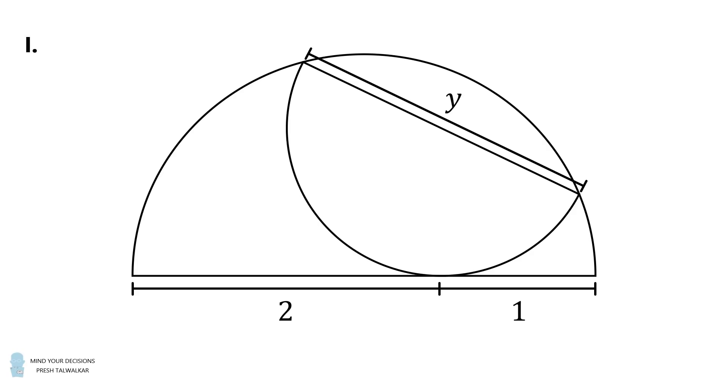That's part 1 of the question. Part 2 is to generalize. Suppose the large semicircle's diameter is divided into lengths of A and B. Solve for y in terms of A and B.